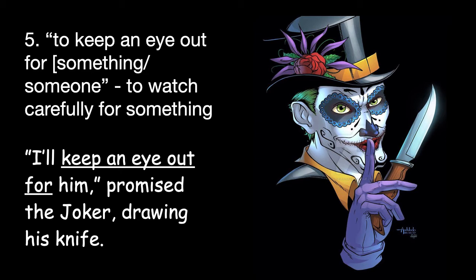The fifth idiom is to keep an eye out for something or someone. The meaning is to watch carefully for something or someone. The example sentence is: I will keep an eye out for him, promised the Joker, drawing his knife. The Joker and Batman are enemies, and now Commissioner Gordon has threatened to call Batman. So the Joker is drawing his knife and saying: I will keep an eye out for him — for Batman. I will keep an eye out for him means I will watch carefully for him; I am aware that he is coming for me.